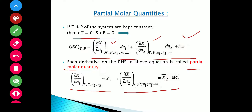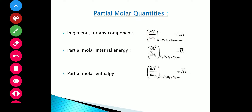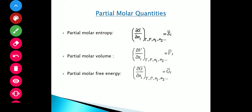As we change the extensive property X, we will get different types of partial molar properties for the given system. In general, for any component, the partial molar property is given by this expression. If the extensive property is internal energy, we get partial molar internal energy. If it is enthalpy, we get partial molar enthalpy. Similarly, if we have entropy we get partial molar entropy, if we have volume we get partial molar volume, and if we have free energy as the extensive property we get partial molar free energy.